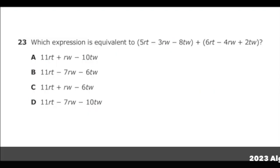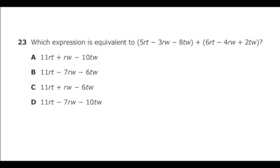This is number 23 from the 2022 Algebra 1 EOC. Which expression is equivalent to 5RT minus 3RW minus 8TW plus 6RT minus 4RW plus 2TW? So all we have to do is just combine like terms. So 5RT plus 6RT is 11RT. Negative 3RW plus negative 4RW is negative 7RW. So we can go ahead and eliminate A and C.